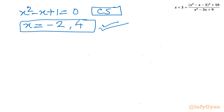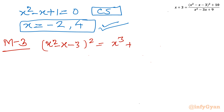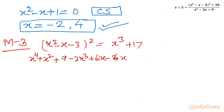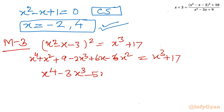Now method number 3, the conventional one. I will apply the rational root theorem and synthetic division method. Starting from (x² - x - 3)² = x³ + 17, I literally expand using the (a + b + c)² formula. After expanding and simplifying, we arrive at the quartic equation: x⁴ - 3x³ - 5x² + 6x - 8 = 0.